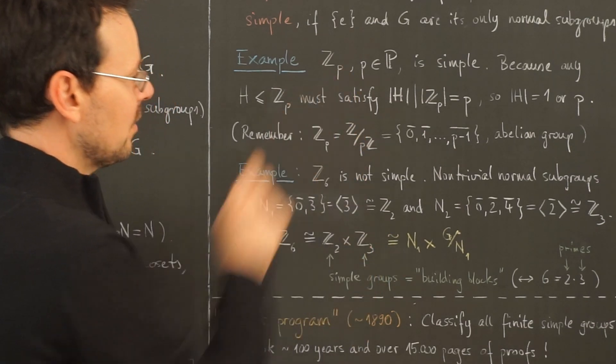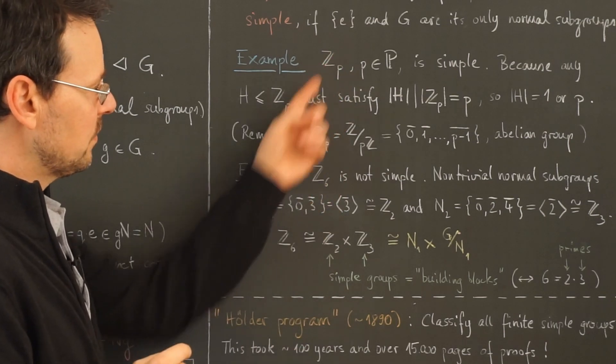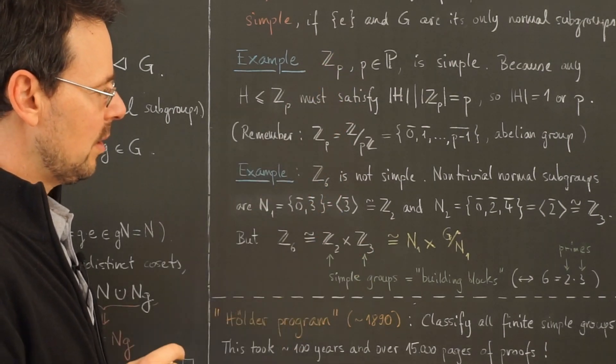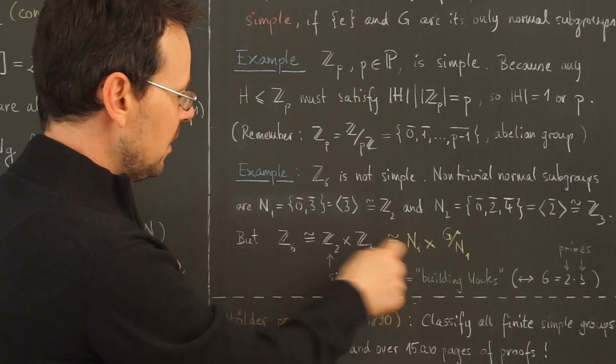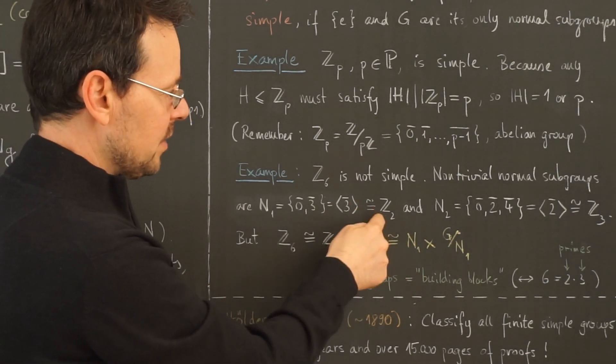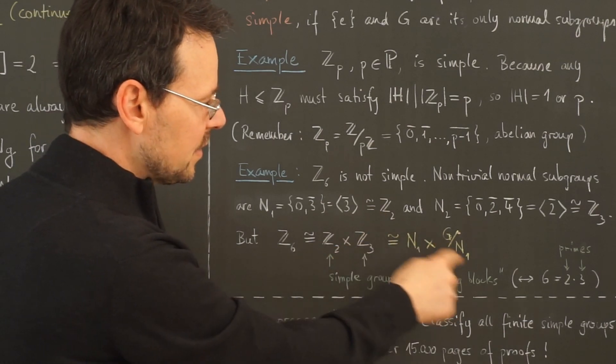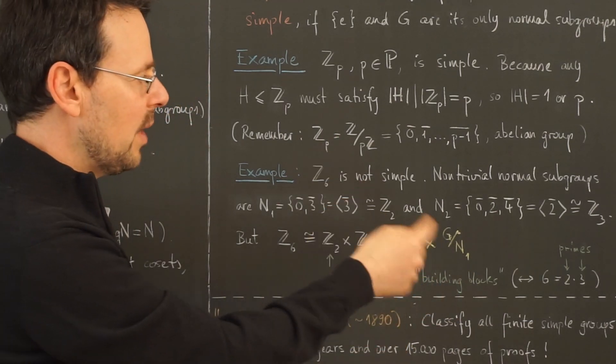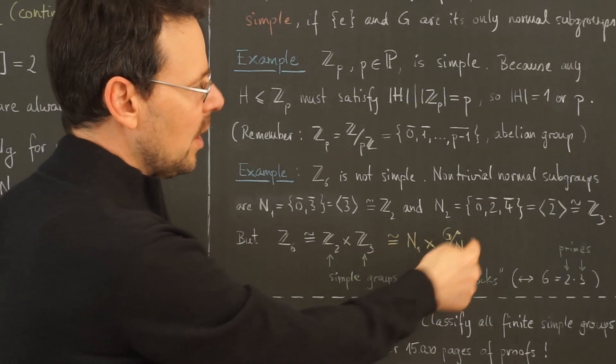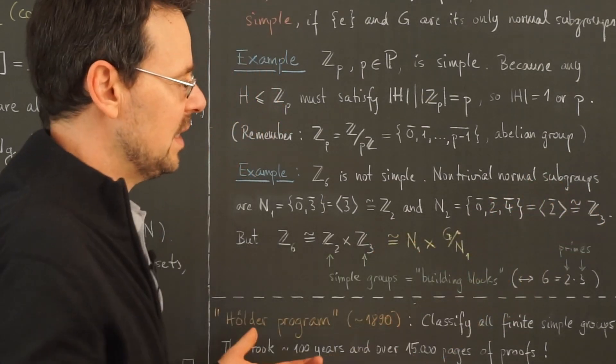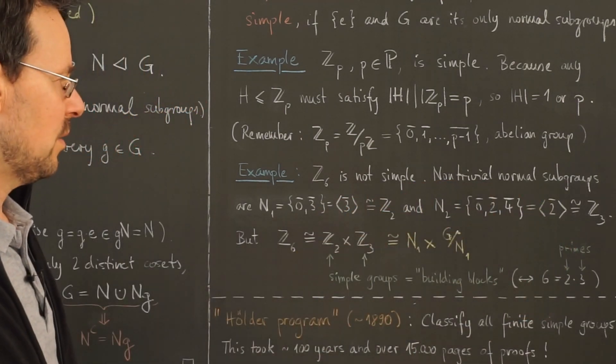Because here, those are exactly groups from this example, because 2 and 3 are prime numbers. And even more interestingly, this here is just N1 up to isomorphism. And this here is the quotient of G by N1, because this here is a group of order 3, hence isomorphic to Z3, which is isomorphic to N2.